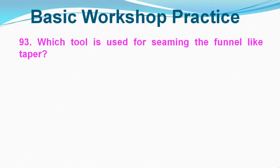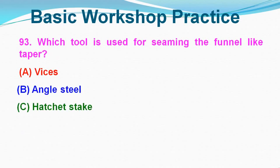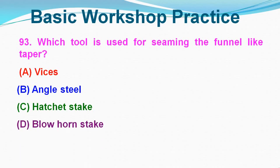Question No. 93: Which tool is used for forming the funnel-like taper? Option A: Vices, Option B: Angle steel, Option C: Hatchet stake, Option D: Blow horn stake. Correct answer is Option D, Blow horn stake.